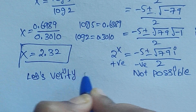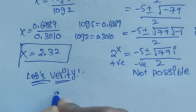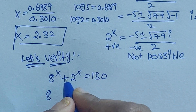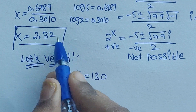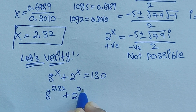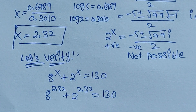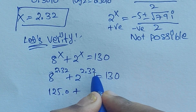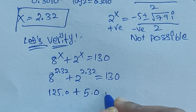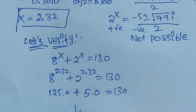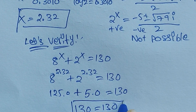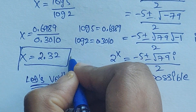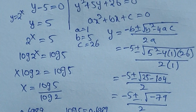Let's verify this answer. Substituting x equals 2.32: 8 to the power of 2.32 plus 2 to the power of 2.32 equals 130. We get 8 to the power of 2.32 approximately equal to 125, and 2 to the power of 2.32 approximately equal to 5. So 125 plus 5 equals 130. This is true, confirming x equals 2.32 is the correct answer.